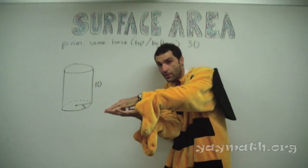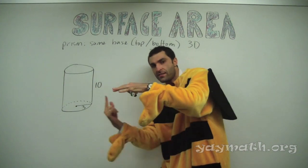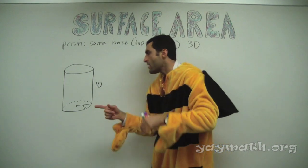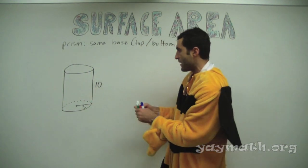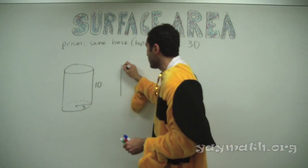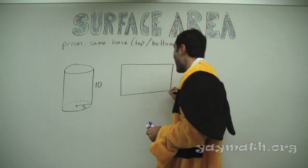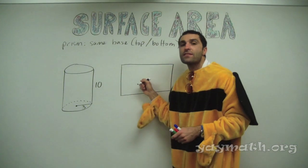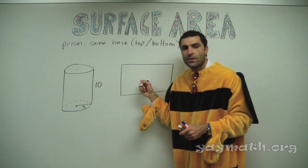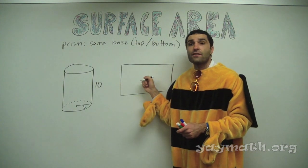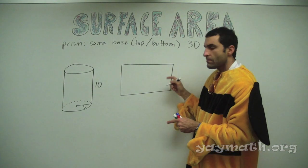A hexagonal prism — open it up: six rectangles around the side. So let's unravel this rectangle and draw it here. How do you get the area of this rectangle? Base times height.